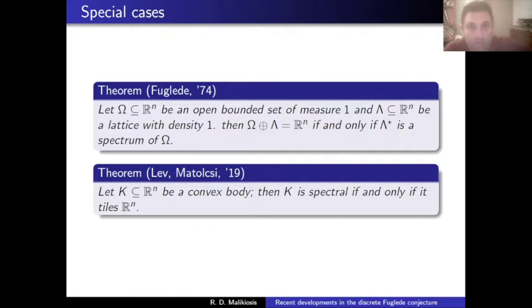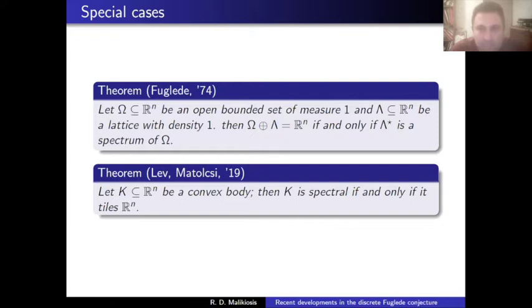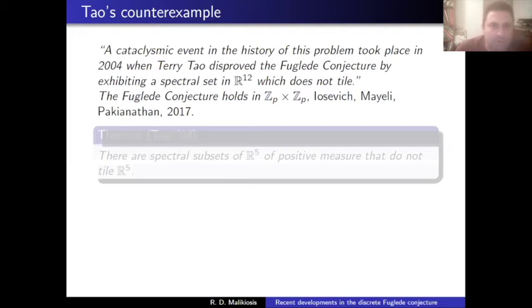Then — and I guess all of you know this — the conjecture is not true. A counterexample was found in 2004 by Terence Tao. I was curious to see how an expert working on this problem many years would think about this counterexample. I'd like to use a direct quote from a paper by Iosevich, Magellan, and Pakistani collaborators: this was sort of a cataclysmic event for this problem. People did not expect that a counterexample would be found — that the conjecture would be false.